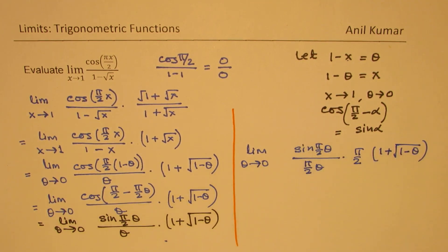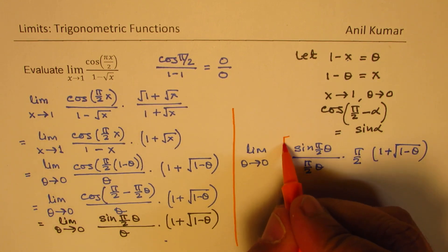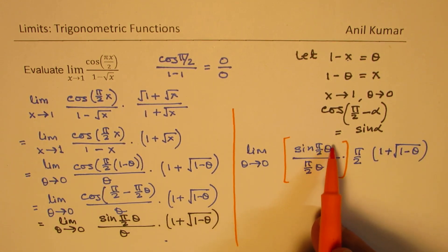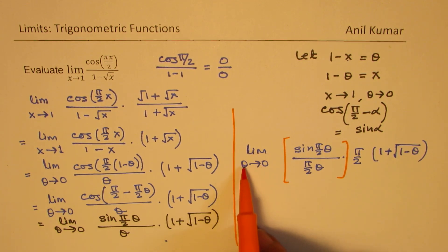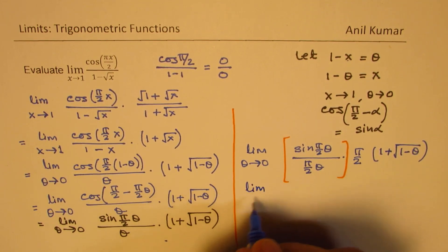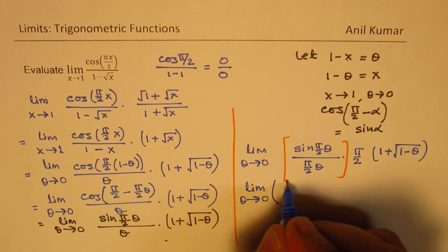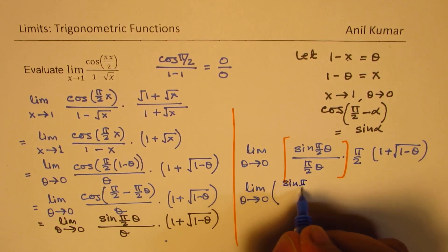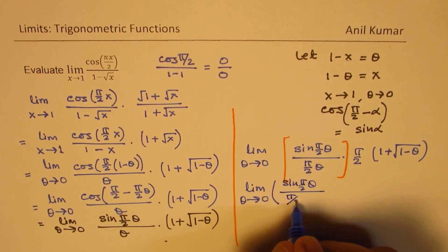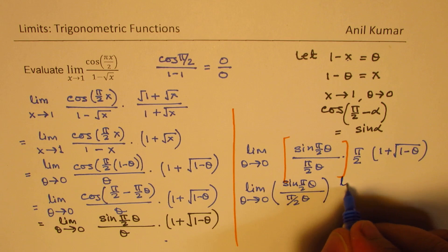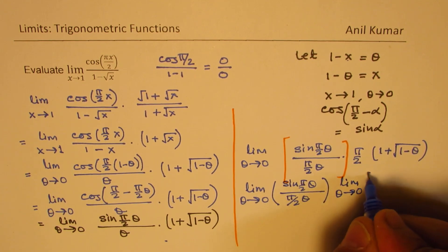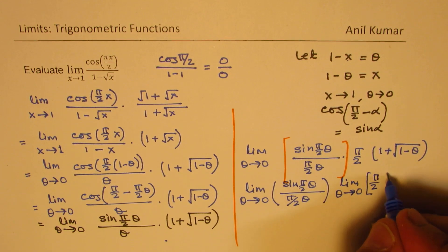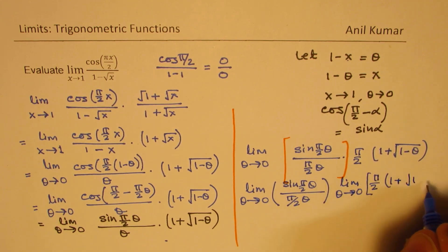Now this portion, which is sin(πθ/2) over (πθ/2) for limit theta approaches 0, is 1. So we can write this as limit theta approaches 0 of [sin(πθ/2)/(πθ/2)] times limit theta approaches 0 for π/2 times (1 plus square root of (1-θ)).